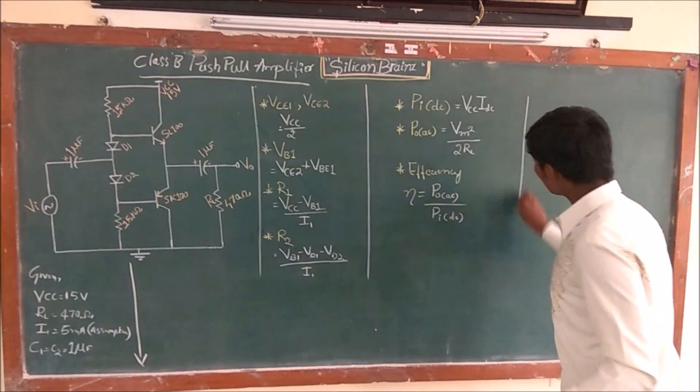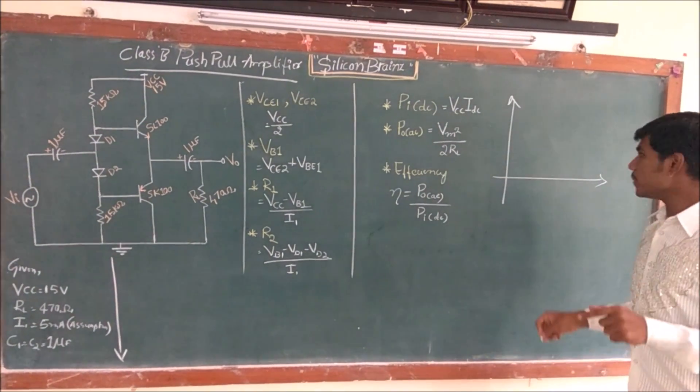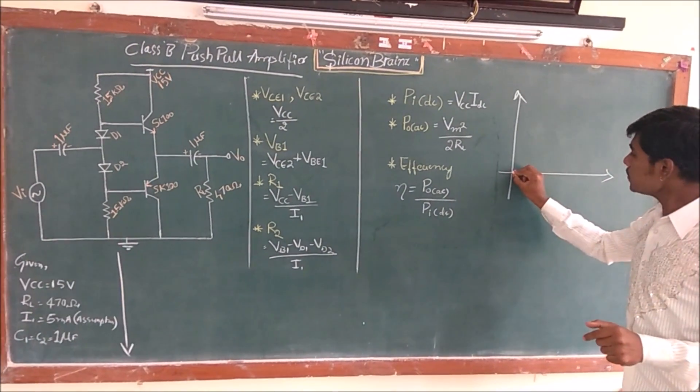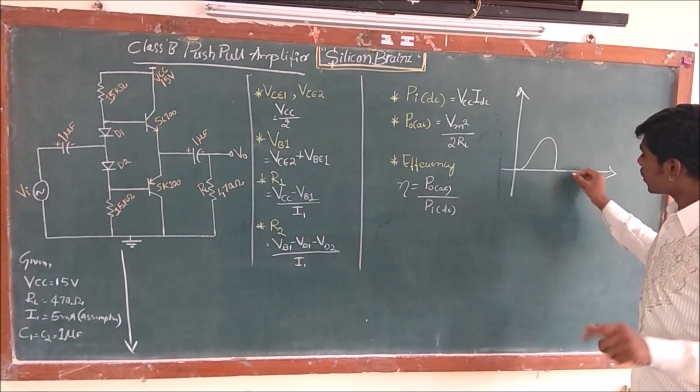What happens, what is the result voltage in a Class B complementary amplifier? One of the major disadvantages is crossover distortion, crossover distortion.